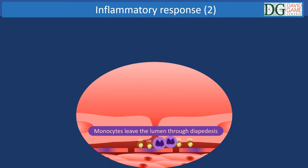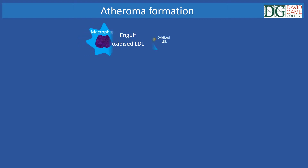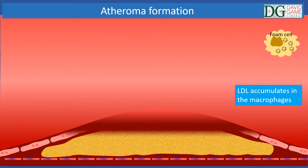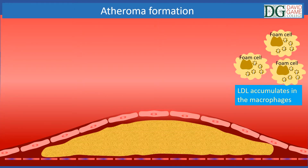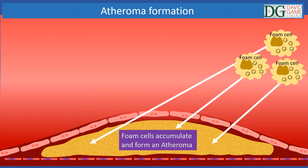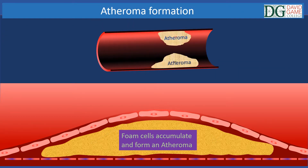Monocytes then leave the lumen through the process of diapedesis. In response to stress signals, monocytes then transform into macrophages and engulf oxidized LDL through endocytosis. The oxidized LDL accumulates in the macrophages and as a result, macrophages become fat-filled foam cells and form an atheroma. The atheroma narrows the artery lumen, restricts blood flow and increases resistance to flow.